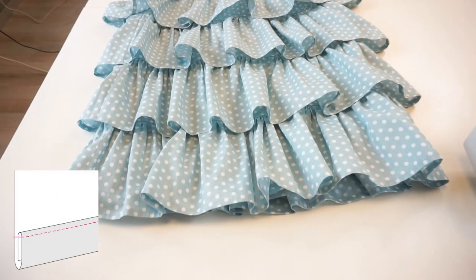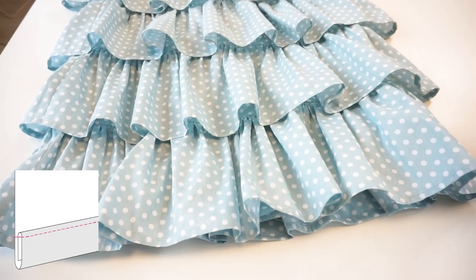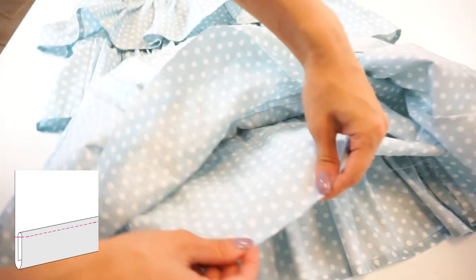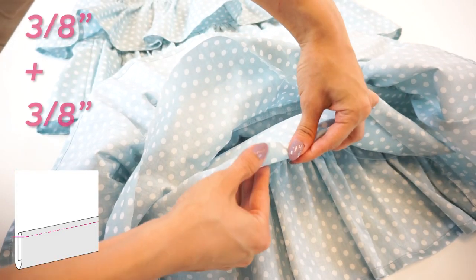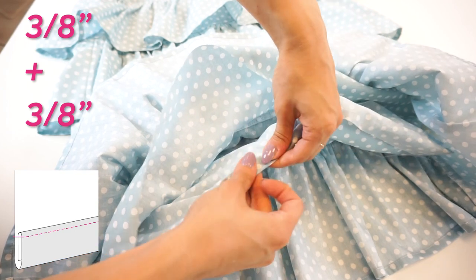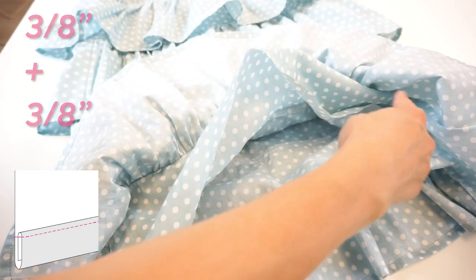The last step we need to do is hemming. Let's use the double folded hem again. Fold one centimeter and fold one centimeter again and stitch around the edge.